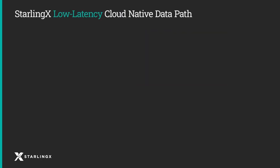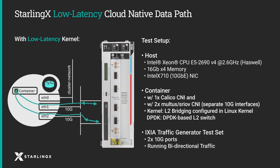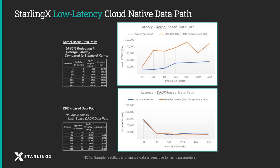In this view, we see the comparison between a high-performance and a low-latency cloud-native datapath. The test setup is the same, except StarlingX is now using a low-latency kernel. This might apply when you need low latency in the signaling plane — for example, call setup with traffic that isn't sending a lot of data but needs very low latency.